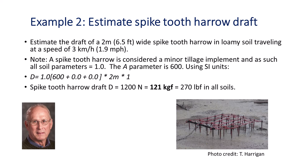Let's work through another example: estimate the draft of a 2-meter wide spike tooth harrow in loamy soil traveling at 3 kilometers per hour. A spike tooth harrow is a secondary tillage tool to level the soil and uproot weeds for planting. It is considered a minor tillage tool, so all soil parameters equal 1. The A parameter is 600, and the estimated harrow draft is 1,200 newtons or 121 kilogram force.